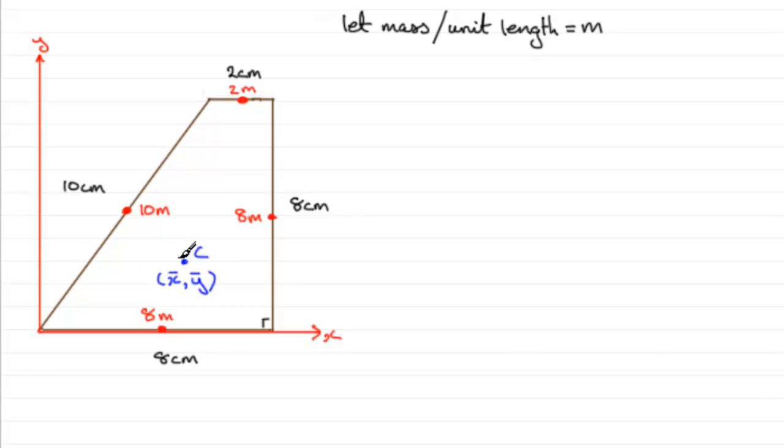Well, that total mass acting through C is going to be the total of these individual masses. And if we add up 10, 2, 8, and 8M, then what we're going to get is a total of 28M. So we've got a mass of 28M acting through this point here with coordinates x bar, y bar.